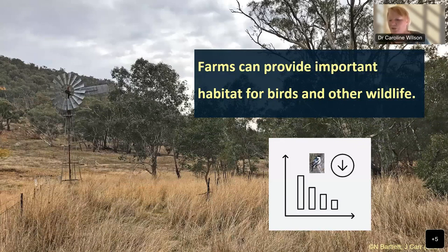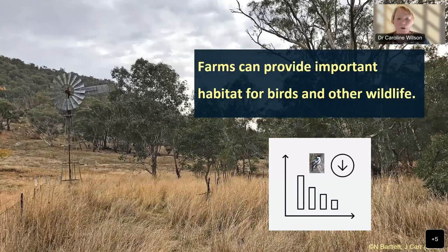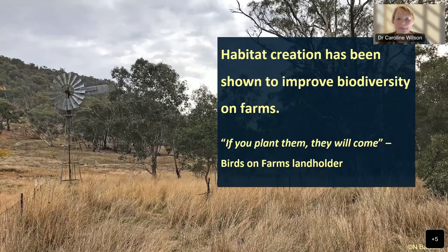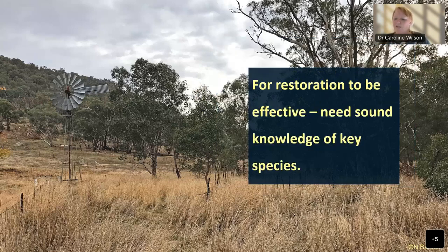Clearing of habitat, particularly due to agriculture, has resulted in decline in birds and overall biodiversity across Australia. But this can be turned around — habitat creation, even on intensively managed farms, can achieve increases in plants and animals. For restoration to be effective, it must be evidence-based and developed using sound knowledge of the ecological requirements of these species. That's where Birds on Farms comes in. Birds are widely acknowledged as good indicators of ecological condition — they use a variety of habitats, are sensitive to physical, chemical and biological change, and are relatively easy and inexpensive to monitor.